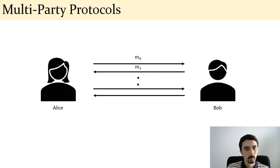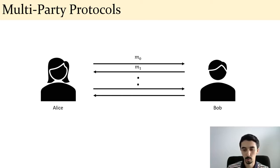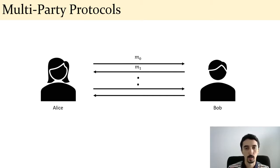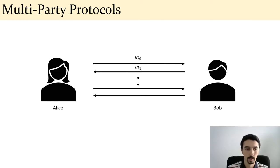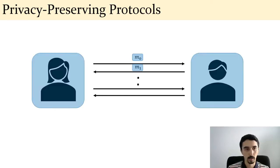I'm sure everyone knows what a multi-party protocol is, but just to recap: we have a bunch of parties — in the simplest setting, Alice and Bob. They may exchange messages, run internal computations, and output messages. Alice knows who Bob is, Bob knows who Alice is, and everyone else can see the exchanged messages and who is exchanging them. From a cryptographic perspective this is not desirable because messages M0, M1, and so on might contain secret information, and leaking user identities is also undesirable.